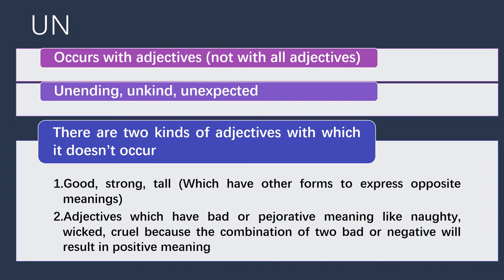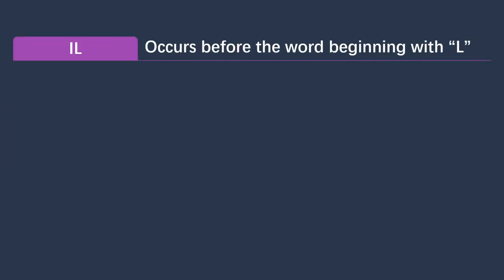For example, for 'tall' we can say 'small,' and for 'good' we can say 'bad,' so there is another way to express the opposite meaning. Also, 'un' doesn't occur with adjectives that already have a bad or pejorative meaning, like 'naughty,' 'wicked,' or 'cruel.' Because these words already have a negative meaning, adding 'un' would result in a positive meaning — so we can't say 'unnaughty.'